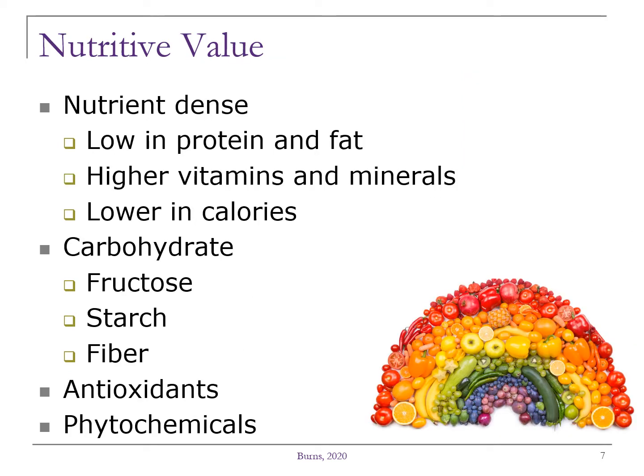Fresh fruits and vegetables are nutrient-dense foods, meaning that they are higher in nutrients and lower in calories. The majority of the calories come from healthy natural carbohydrate. Fruits are high in the monosaccharide fructose, while vegetables tend to be higher in starch. Fresh fruits and vegetables are also good sources of fiber, both insoluble and soluble. Many times the fiber is found in the peel or the skin, so when you don't eat the apple skin, you're losing out on some of that fiber.